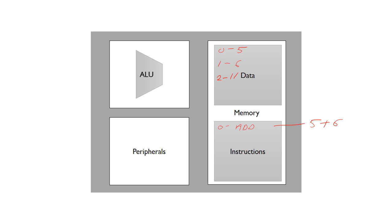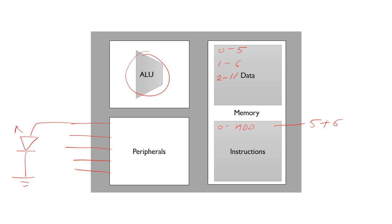The thing that actually carries out these operations is the arithmetic logic unit inside of the CPU. We've also got peripherals, because often we want to connect microcontrollers to external components — things that are outside of the microcontroller. A very simple case: you might want to have an LED. We can actually control the LED using instructions in the memory.